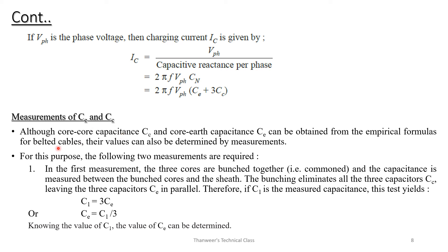Measurement of Ce and Cc: although core-to-core capacitance Cc and core-to-earth capacitance Ce can be obtained from empirical formulas for belted cables, their values can also be determined by measurements. Two measurements are required. In the first measurement, three cores are bunched together and capacitance is measured between the bunch of cores and the sheath. Bunching eliminates all three capacitors Cc, leaving three capacitors Ce in parallel. Therefore, if C1 is the measured capacitance, C1 equals 3Ce, so Ce equals C1 divided by 3.